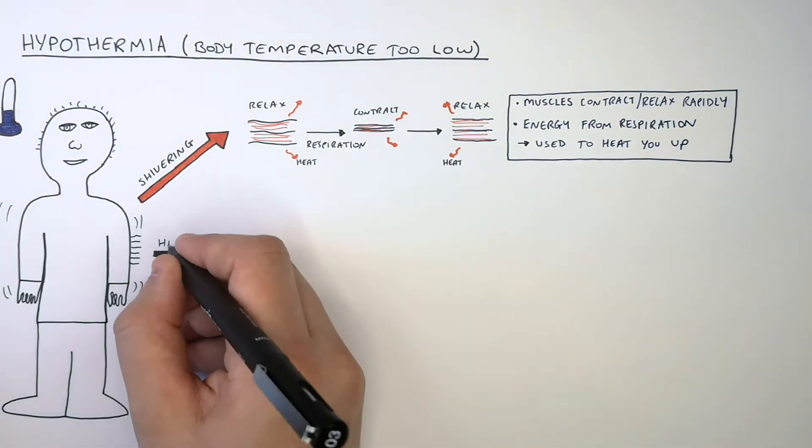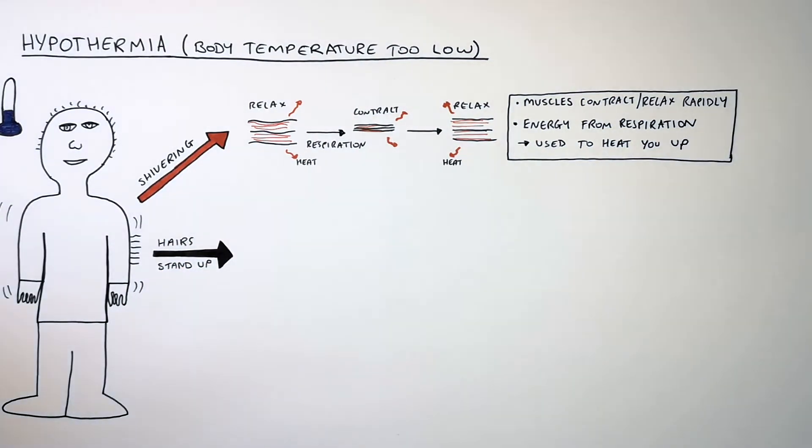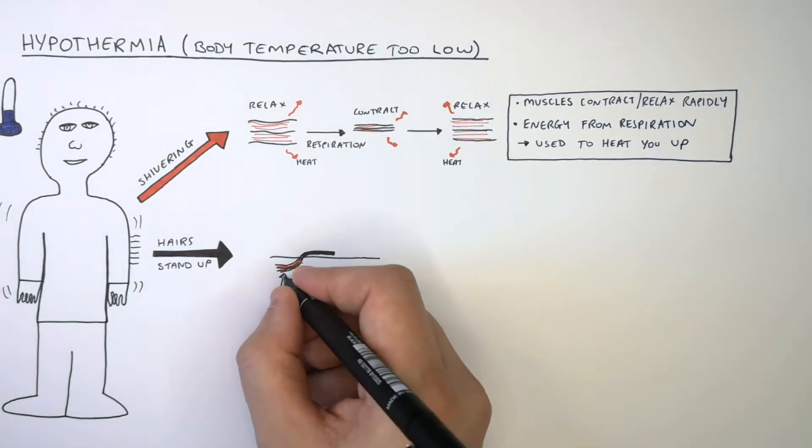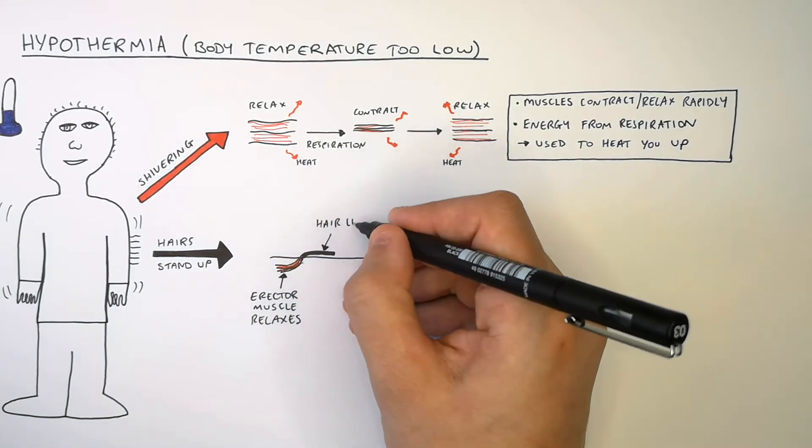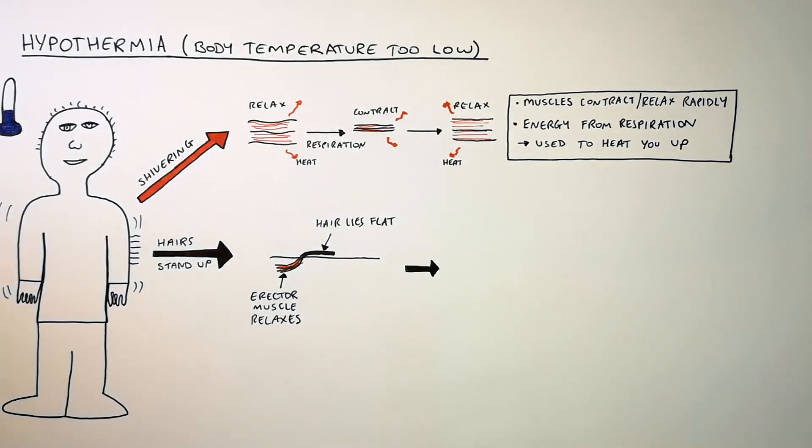When we're cold the hairs on our body will stand up. This is an example of the hairs lying flat. This is because the erector muscles under your skin connect to your hairs. The erector muscles are relaxed. This means that the hairs lie flat on our body and this happens when it's warm.